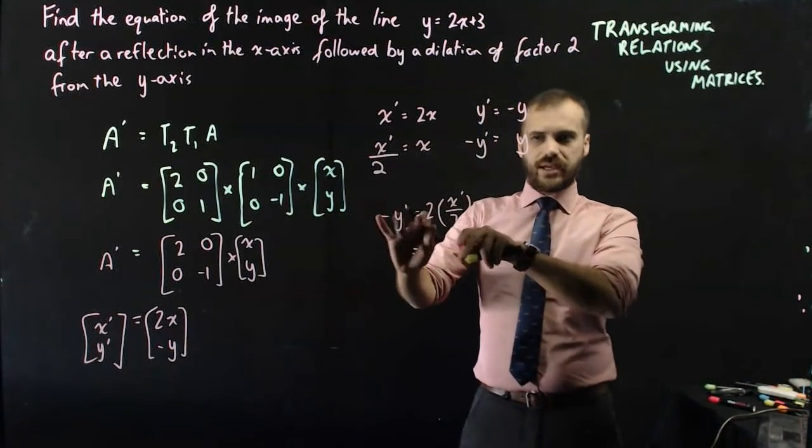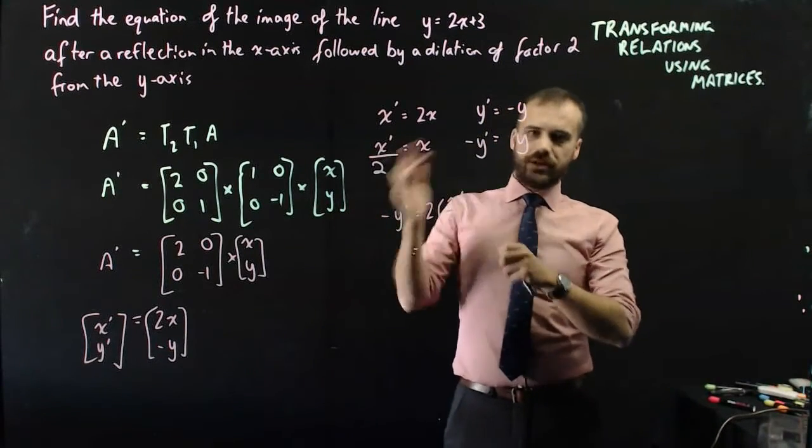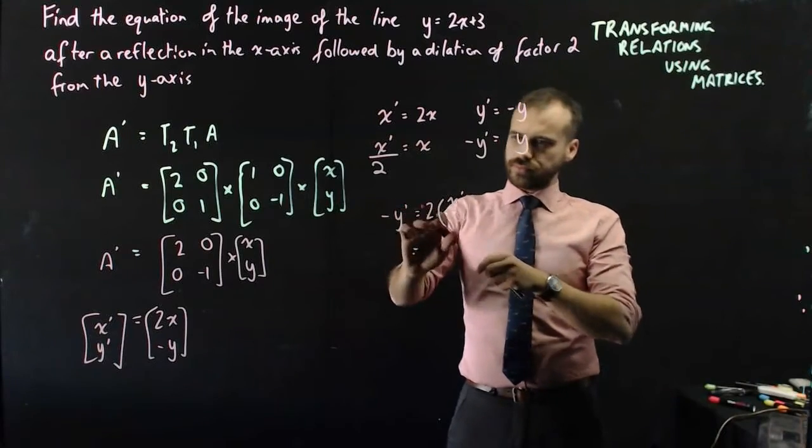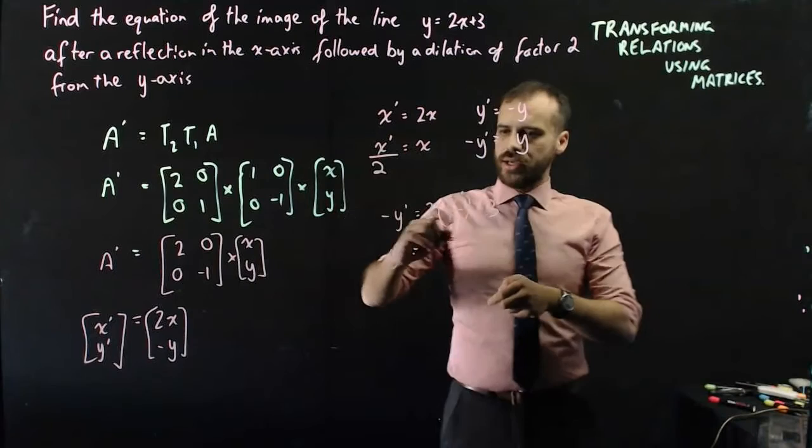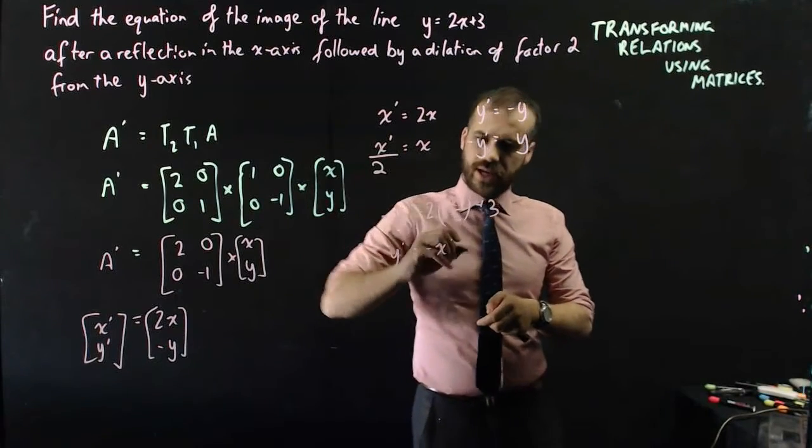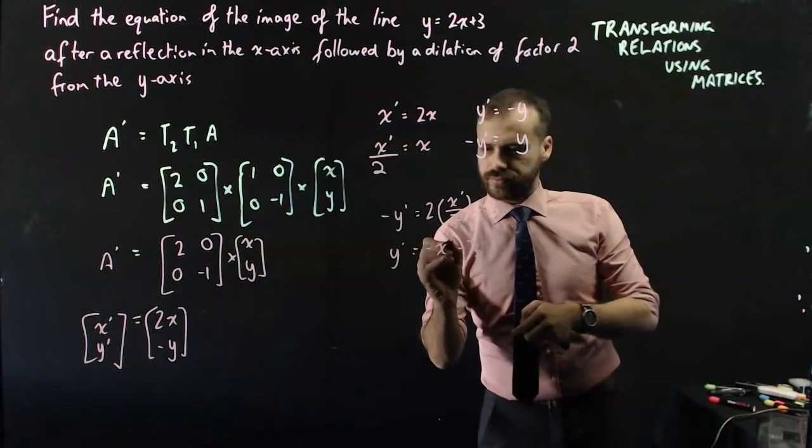Now that's a bit weird to have that negative y in there. So I'll multiply everything by negative 1 and I'll tidy that bit up while I'm at it. y dash is equal to negative x dash negative 3.